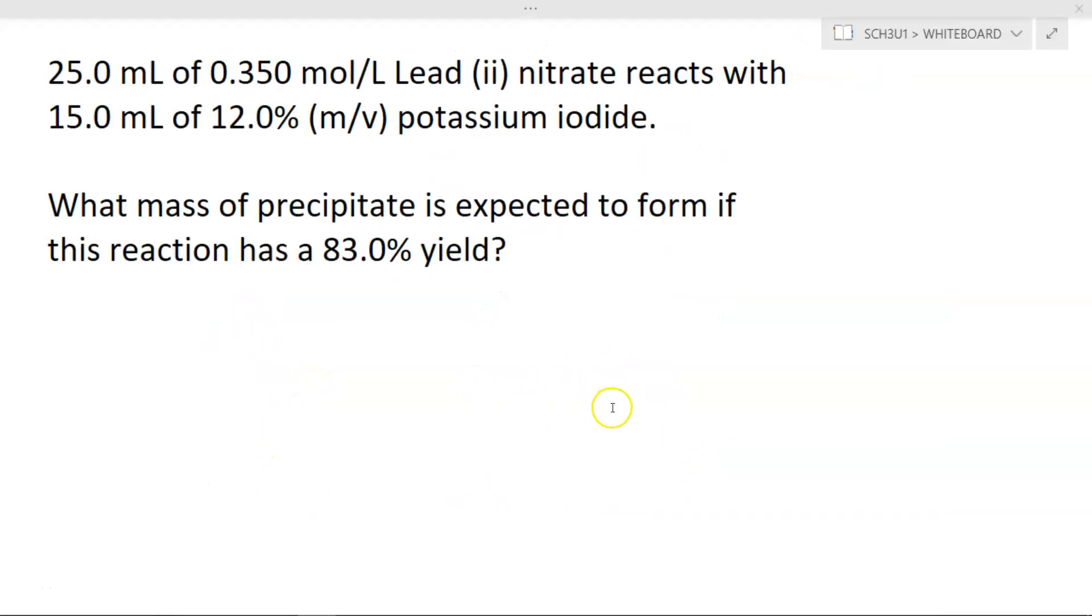Let's try some solution stoichiometry. This question should involve a lot of different concepts we've learned so far. So 25 milliliters of 0.350 molar lead 2 nitrate reacts with 15 milliliters of 12% m/v potassium iodide. What mass of precipitate is expected to form if this reaction has an 83% yield? What I would like you to do is press pause, try it out yourself, when you're ready press play, and we'll take it up together.